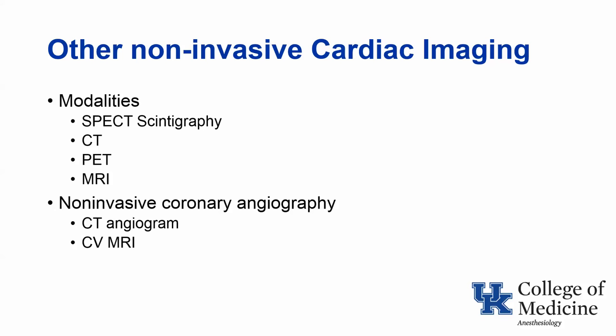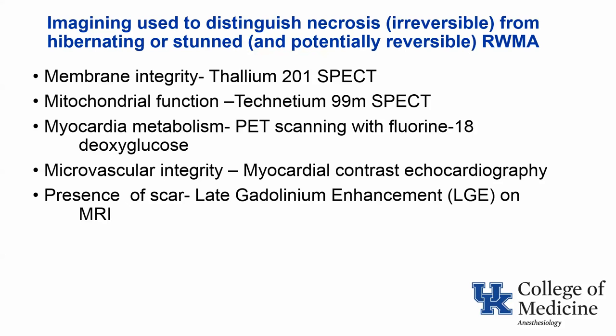In recent years, many other non-invasive cardiac imaging methods have been introduced, including SPECT imaging, CT, PET, and MRI. You can also obtain angiography non-invasively using either CT or cardiovascular MRI. One issue when there are wall motion abnormalities is trying to determine if these are fixed due to necrosis or reversible due to hibernation or stunning. On this slide I've summarized the various tests used to assess reversibility, namely membrane integrity, mitochondrial function, myocardial metabolism, microvascular integrity, or the presence or absence of scar.